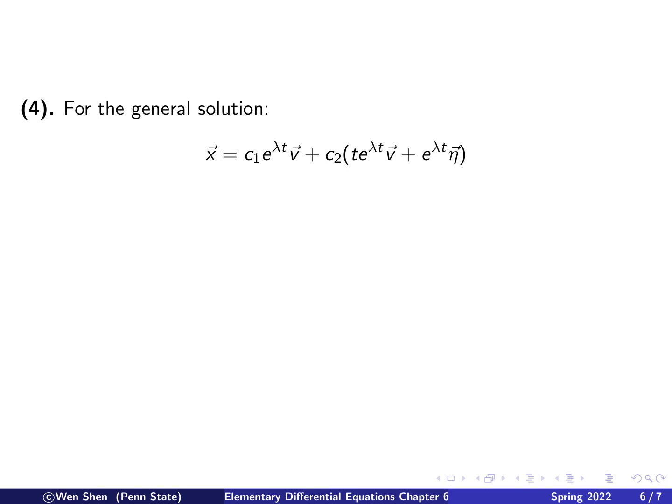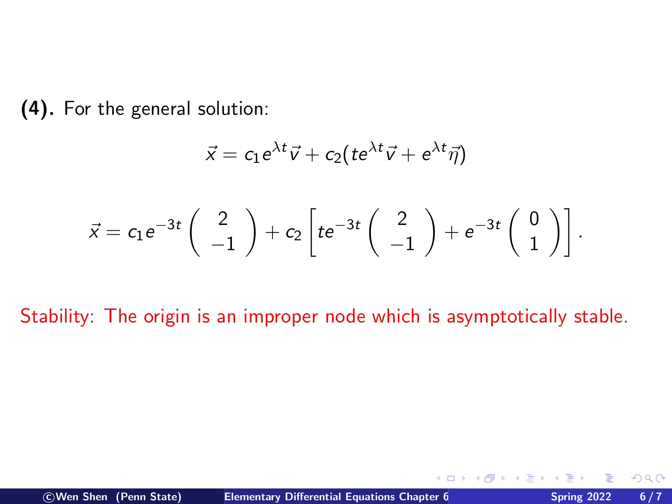And then we form the general solution, which takes this form, and now we have all the terms we have found out. Lambda we know, V we know, eta we know. So we can put in all the values for these terms. Lambda is negative 3, we have that, and then V is 2, negative 1, we put in there, and eta is 0, 1, we put in here, and we write out the general solution.